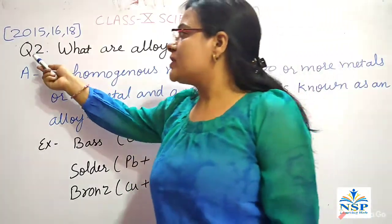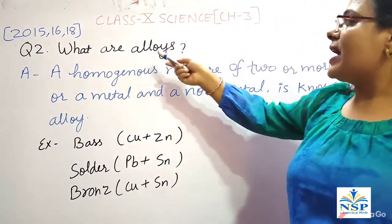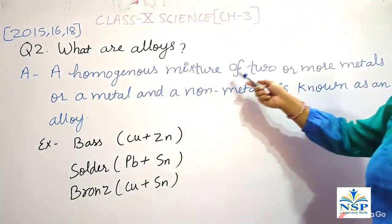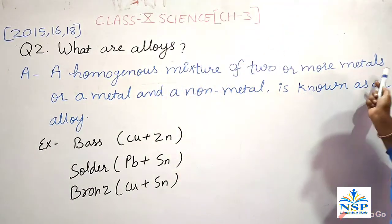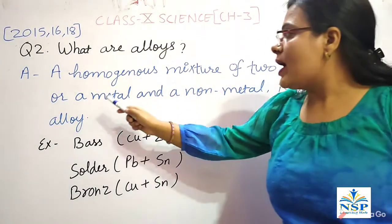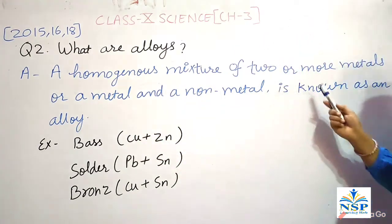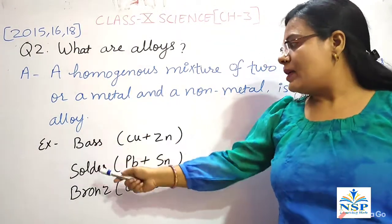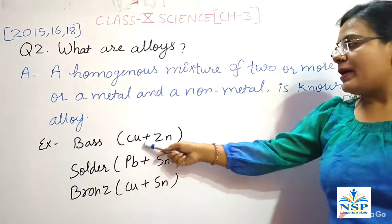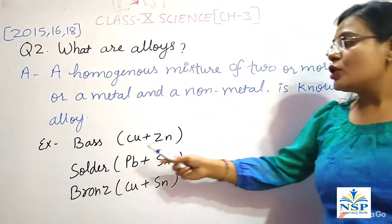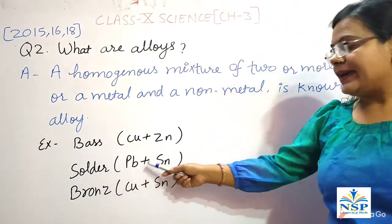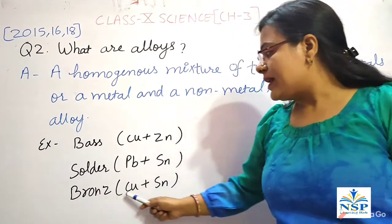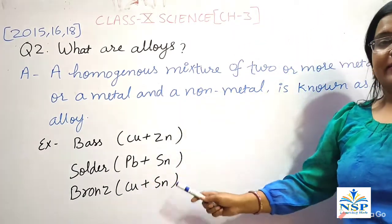Our next important question is question number 2: what are alloys? A homogeneous mixture of two or more metals, or a metal and a non-metal, is known as an alloy. For example, brass is made up of copper and zinc, solder is made up of lead and tin, and bronze is made up of copper and tin.